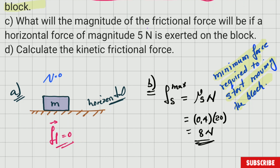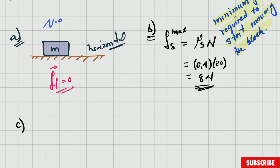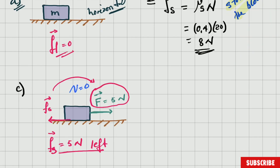Now an important question: what will the magnitude of the frictional force be if a horizontal force of 5 Newtons is exerted on the block? Well, 5 Newtons is less than 8 Newtons, therefore the frictional force is going to be equal to the applied force. This is the same scenario as before — the object is not moving, it is at rest.